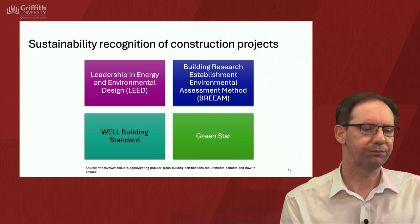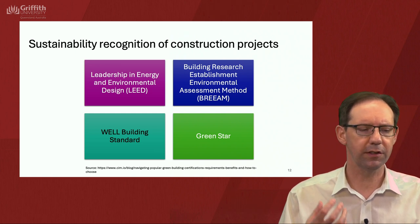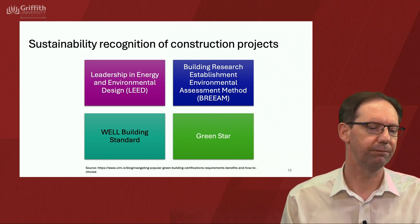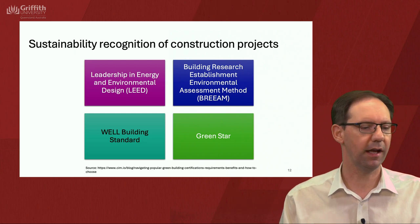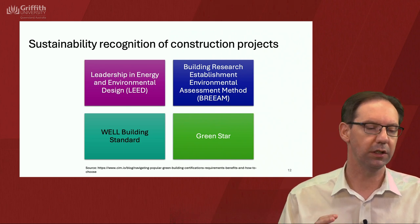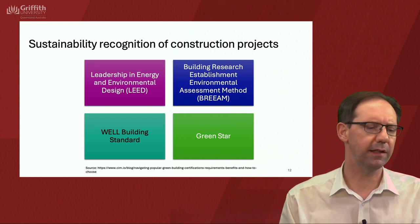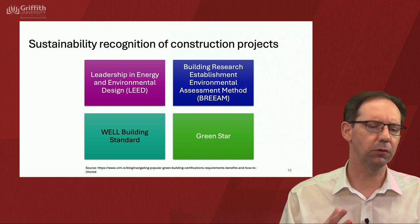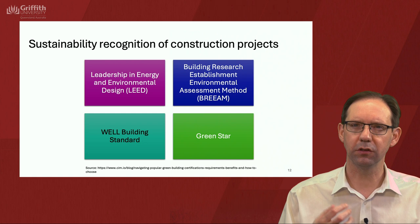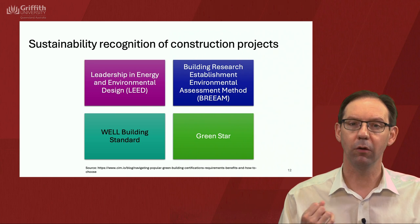Green Star is the Australian certification, founded by the Green Building Council of Australia. Like many such systems, it's a voluntary sustainability rating system, but having that stamp gives credibility to what's being done. Green Star evaluates buildings across nine categories: management, indoor environment quality, energy, transport, water, materials, land use and ecology, emissions, and innovation. Finally, the WELL Building Standard takes a broader approach to sustainability, looking at human health and well-being — not just the environmental side, but the social and personal side of buildings.